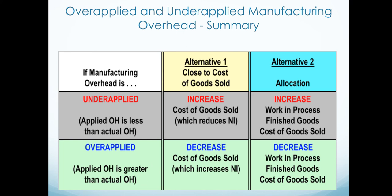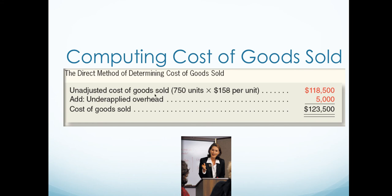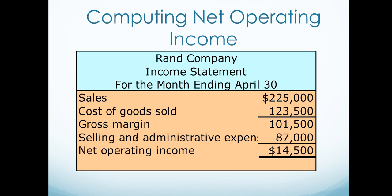This shows that we take the unadjusted cost of goods sold, then account for either under-applied or over-applied overhead to arrive at an adjusted cost of goods sold, which ultimately goes on the income statement. So here you can see basic financial accounting: we take sales, subtract the adjusted cost of goods sold to get gross margin, then deduct administrative and selling expenses to arrive at net income.